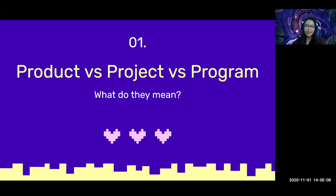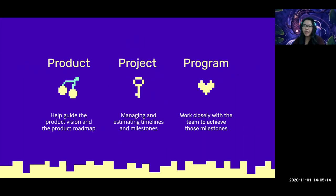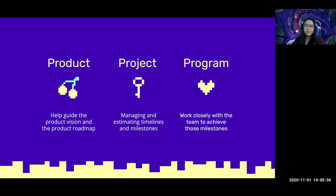So what do they actually mean? Product managers typically help guide the product vision and the roadmap — defining features and working closely with developers and designers. A project manager is maybe managing and estimating timelines to make sure we can hit them. Program managers are typically working closely with the team to make sure that everyone has what they need to achieve goals and hit milestones, so you can almost think of program management as a higher-level version of project management.